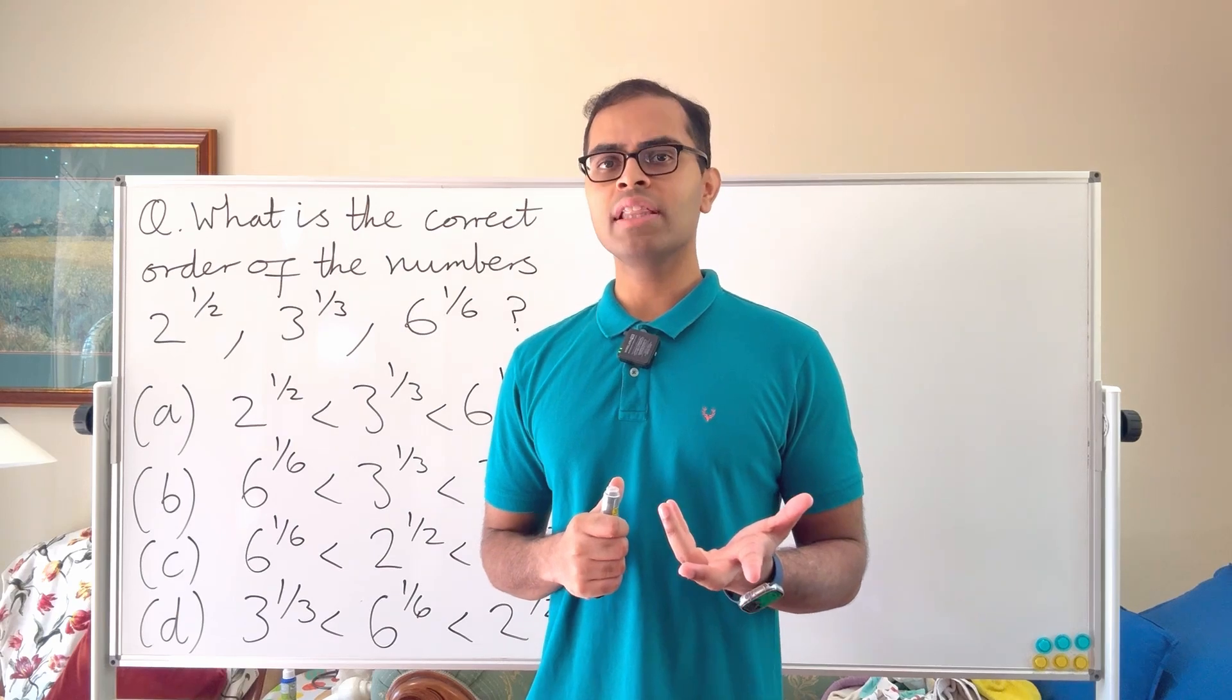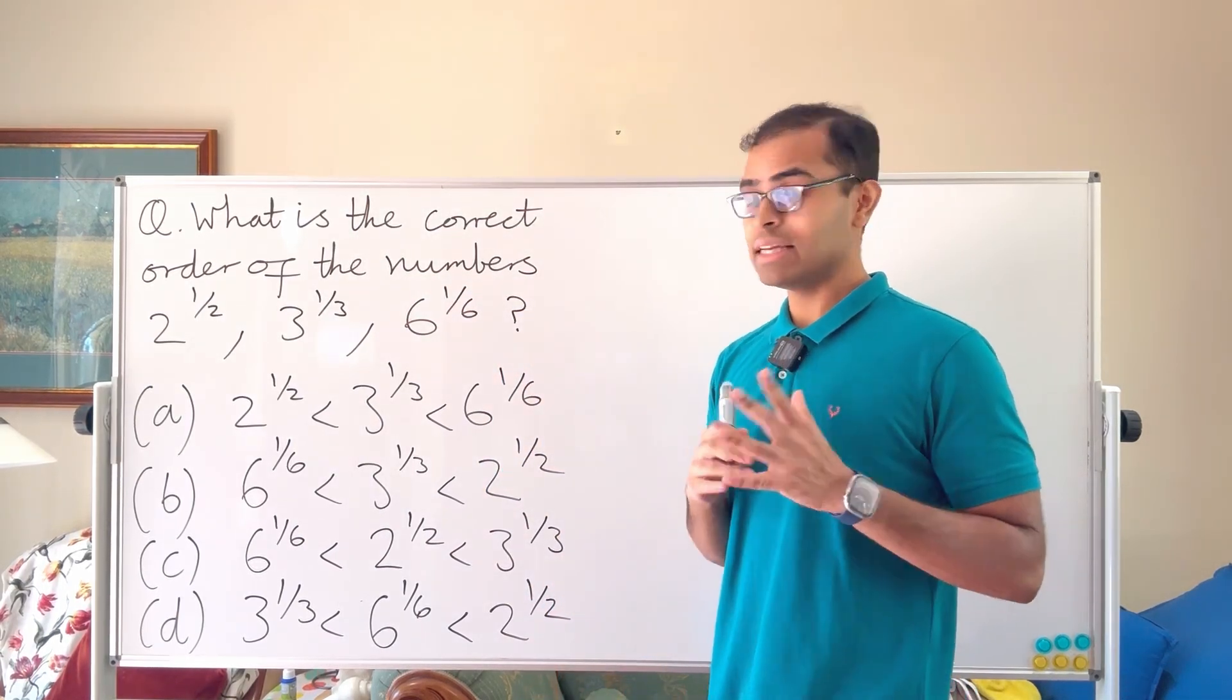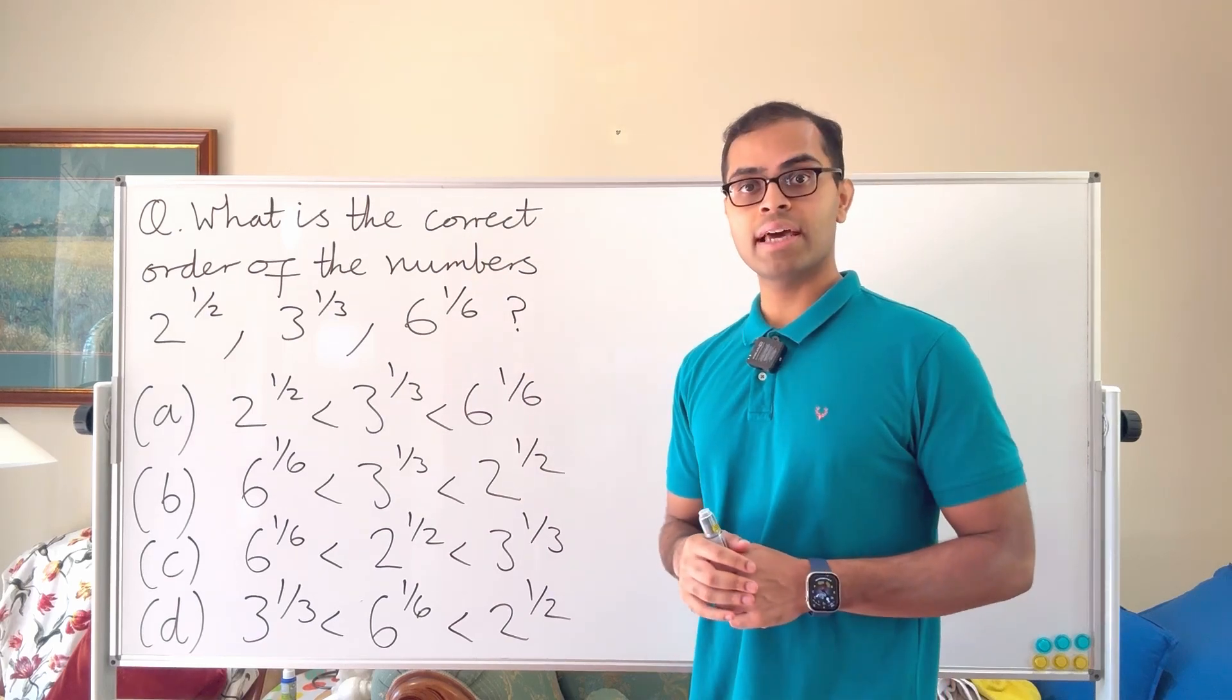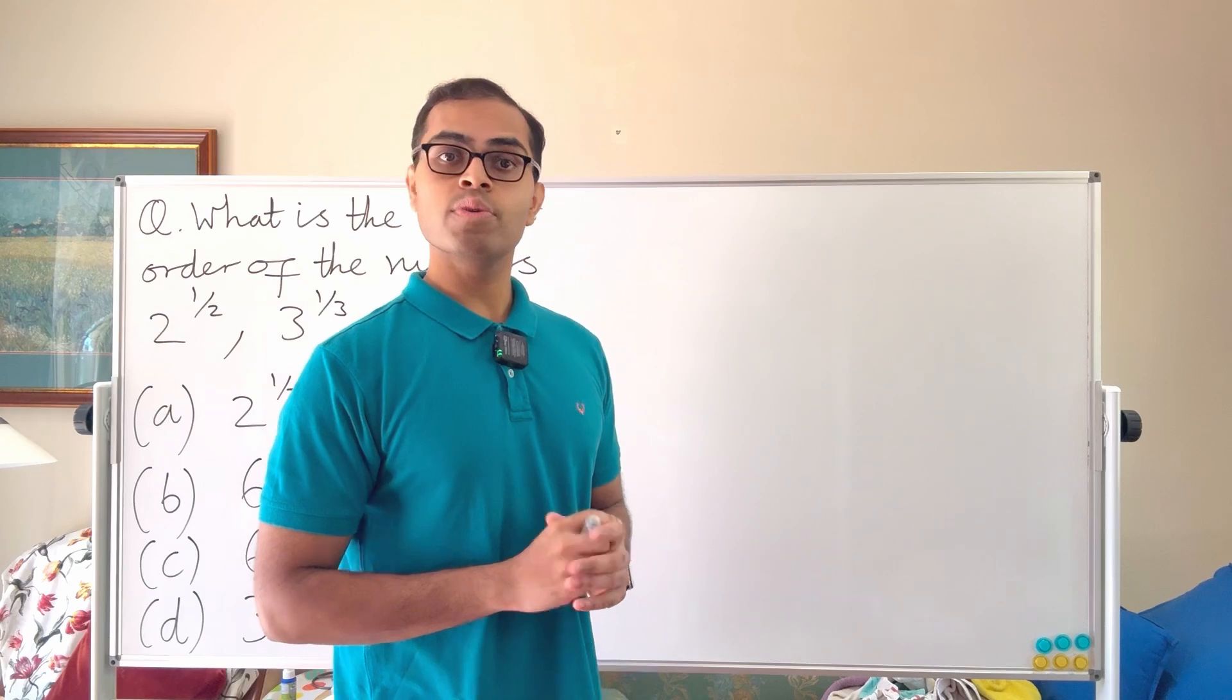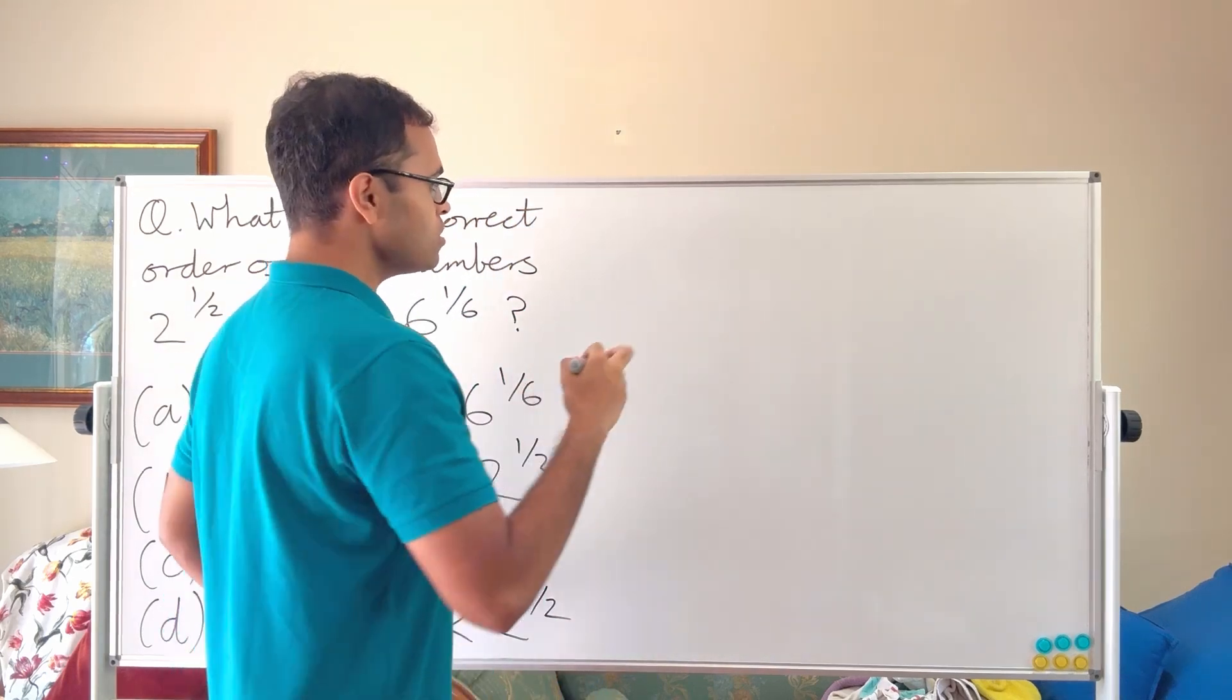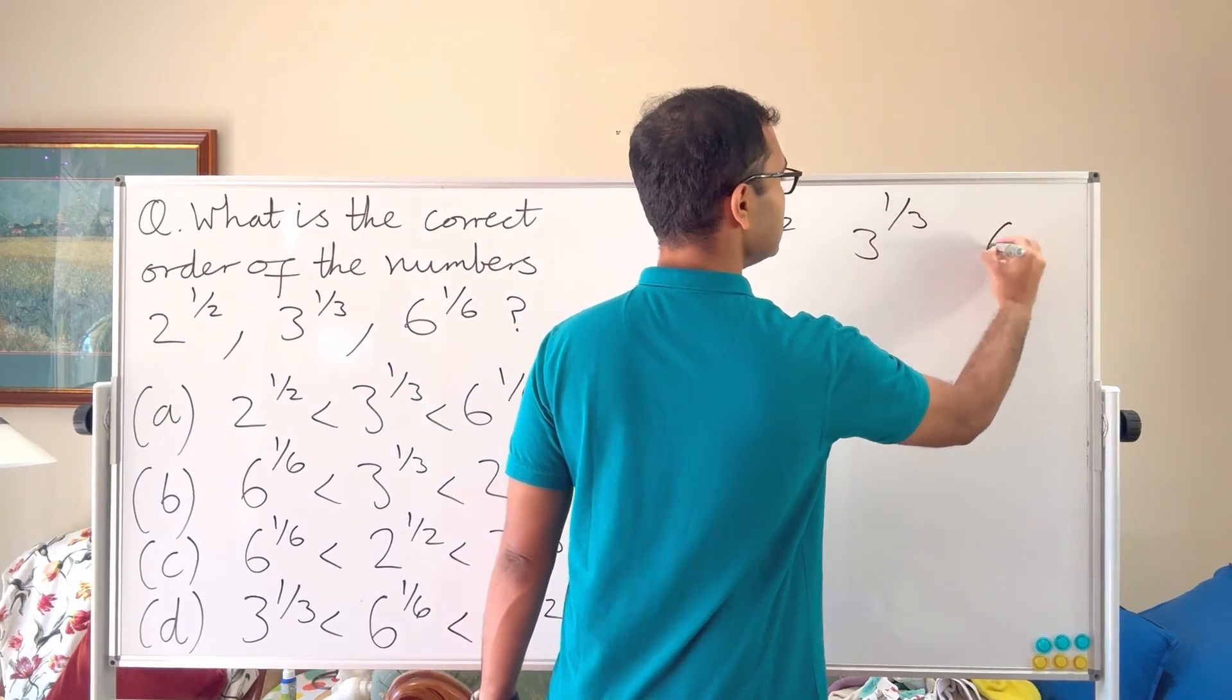The way I like to think about this first of all is fractions are not nice. We really can't get a sense of 6 power one over six that easily or 3 power one third that easily. But what we can do is clear denominators just like we do when solving equations. So what I'm going to do is take the numbers 2 power one half, 3 power one over three, and 6 power one over six, and make everything a nice whole number.